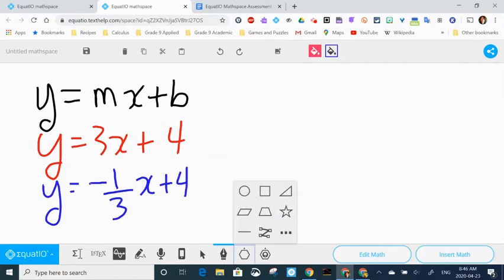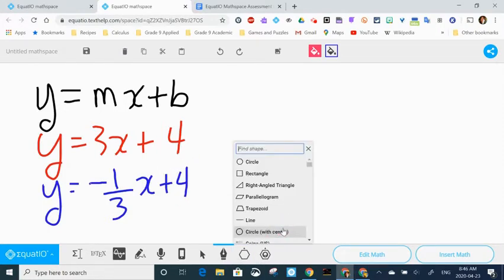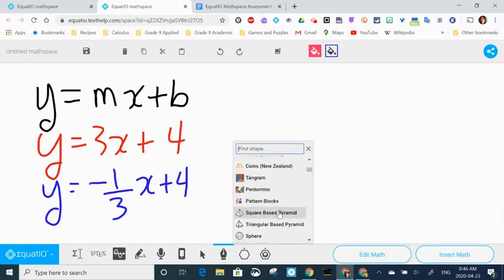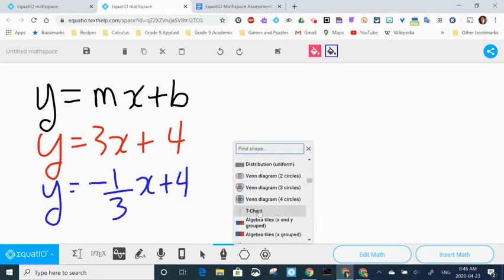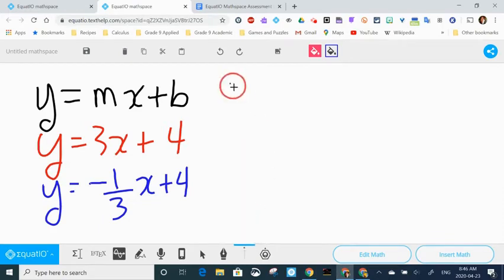Then I want to actually create a table of values. So I'm going to the shapes tool and clicking more shapes. And as I scroll down, I'm actually looking for a t-chart and there it is. So I'm going to insert that.